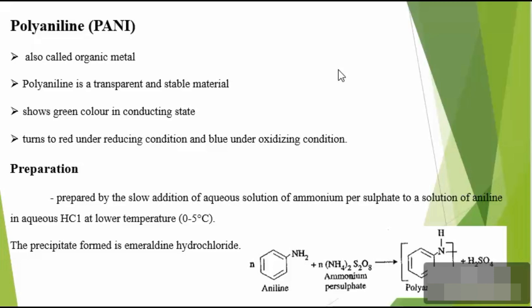Polyaniline is a transparent and stable material and it shows different colors in different states. It is prepared by the slow addition of an aqueous solution of ammonium persulfate to a solution of aniline in aqueous HCl at very low temperature, ranging from 0 to 5 degrees Celsius. When aniline and ammonium persulfate react together, a precipitate is formed called emeraldine hydrochloride. This polyaniline is precipitated as a salt called emeraldine salt. It is gray in color in the conducting state, turns red under reducing conditions, and blue under oxidizing conditions.